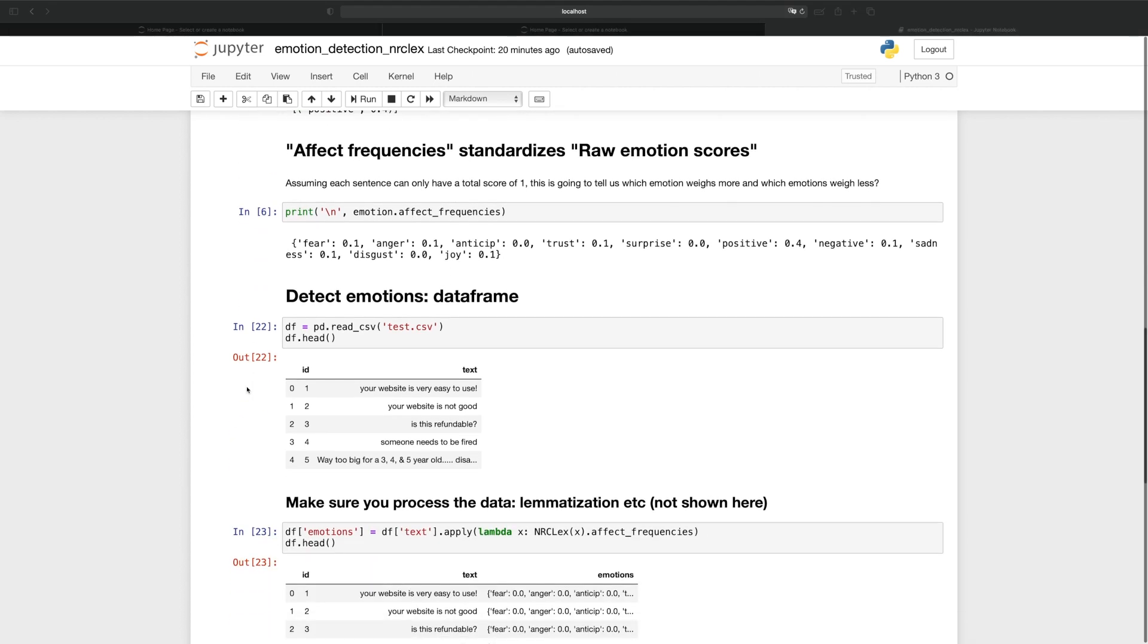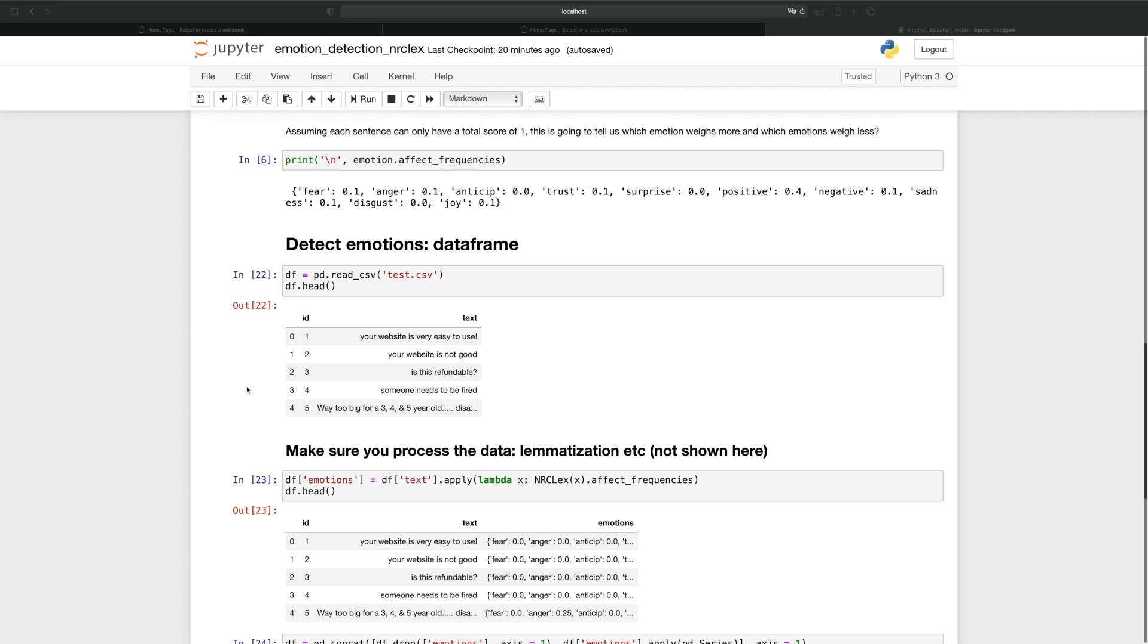And now let's see how to do what we just did to a data frame. I have a data frame that has two columns, one being message ID, and the other one is the actual text. For instance, we have your website is very easy to use, and the opposite, your website is not good, and is this refundable, so on and so forth.